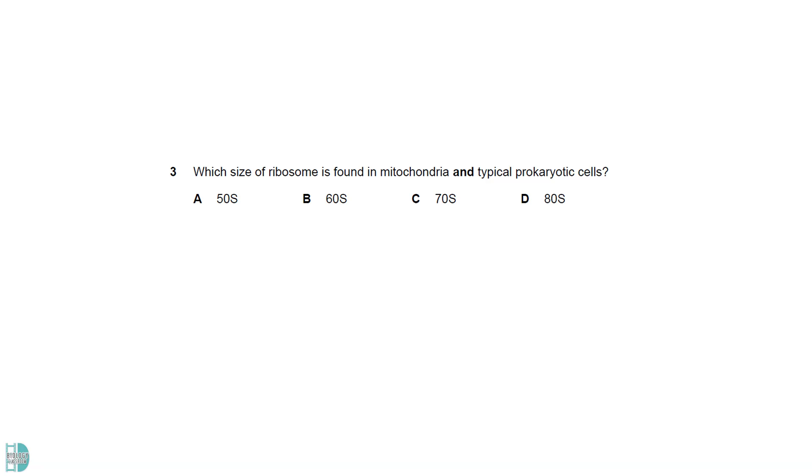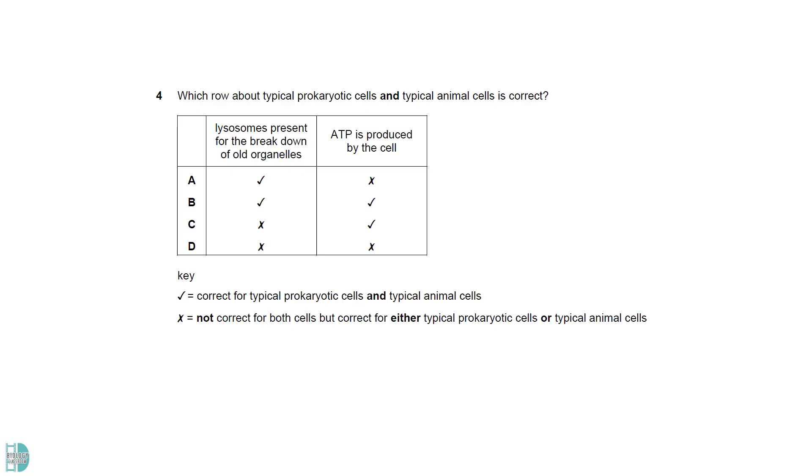Mitochondria and typical prokaryotic cells have 70S ribosomes. 80S ribosomes are found in the cytoplasm and endoplasmic reticulum of eukaryotic cells. Typical prokaryotic cells do not have lysosomes. ATP is the universal energy currency. It is found in both eukaryotic cells and prokaryotic cells.